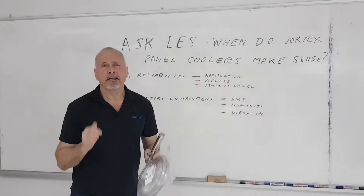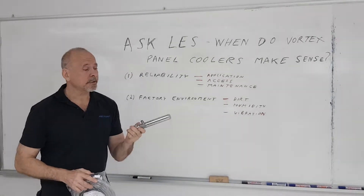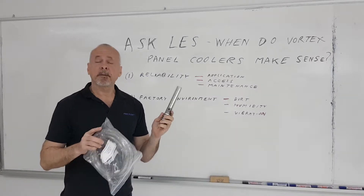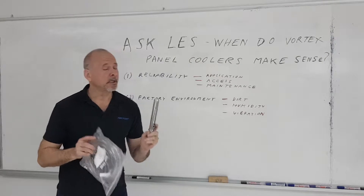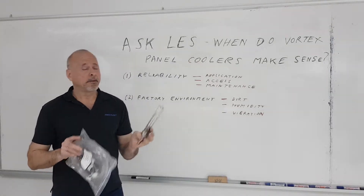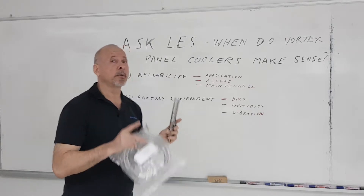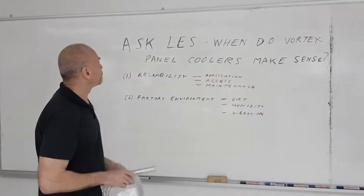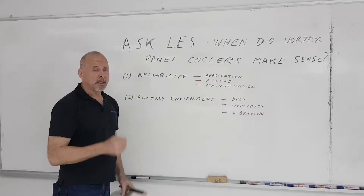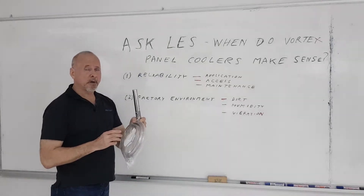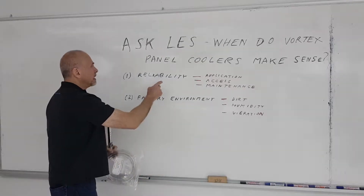One of the critiques people have against vortex tube operated panel coolers is that they use compressed air, and compressed air can be costly — which is true. However, they are used in a lot of places and are much better for a variety of reasons. The two main factors to consider in choosing a vortex tube operated panel cooler over a regular air conditioner are: how important is reliability, and the nature of your factory environment.